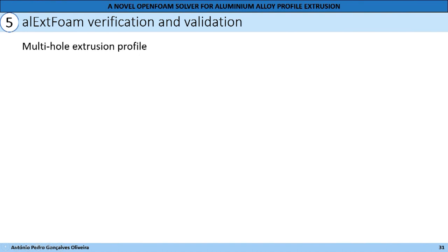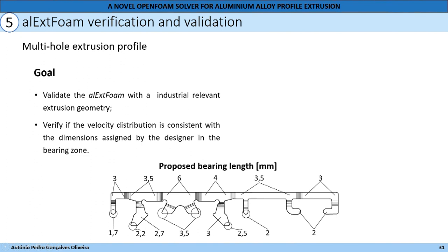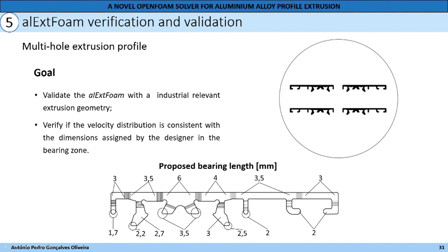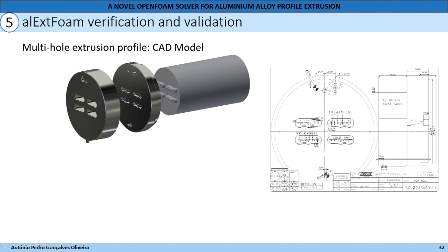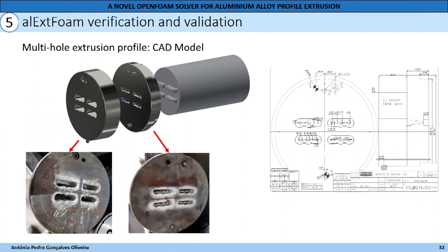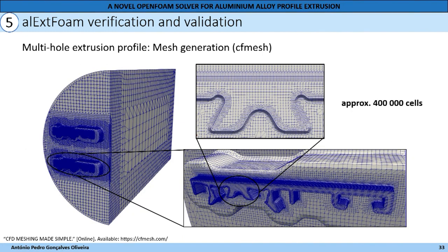Finally, the multi-hole extrusion profile. This last study aims to validate OpenFOAM with an industrially relevant extrusion geometry, and to verify if the velocity distribution is consistent with the dimensions assigned by the designer in the bearing zone. In this image we can see the different bearing lengths assigned by the designer in order to have a balanced flow at the outlet. The die layout has 4 cavities in order to increase production. Through the technical drawing, it was possible to design the die CAD model and the flow material. We are using constant bearing length in order to highlight the velocity distribution at the outlet. The mesh was performed with CFMesh, with an overall 400,000 cells, with greater refinement level at the outlet and bearing due to higher gradients.